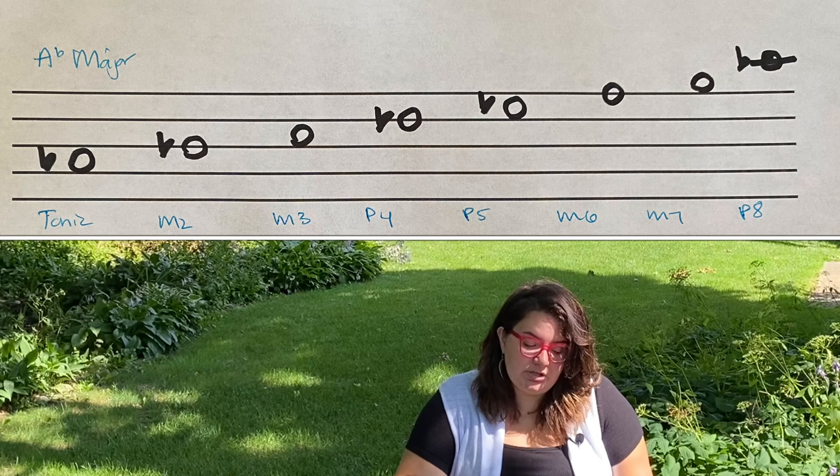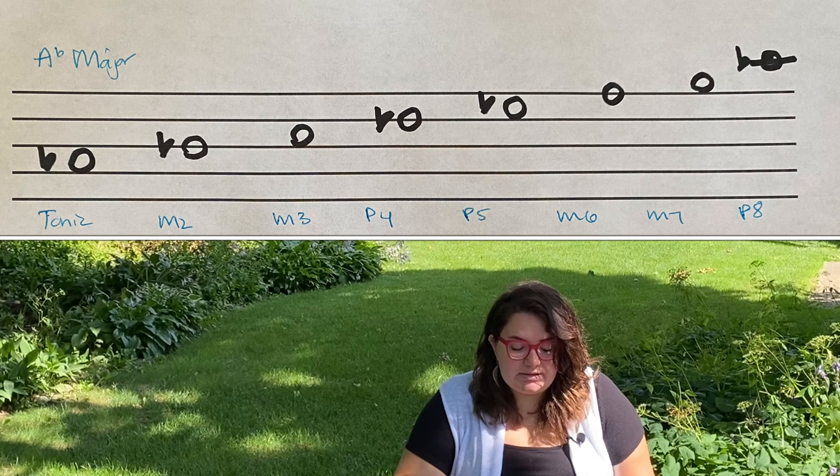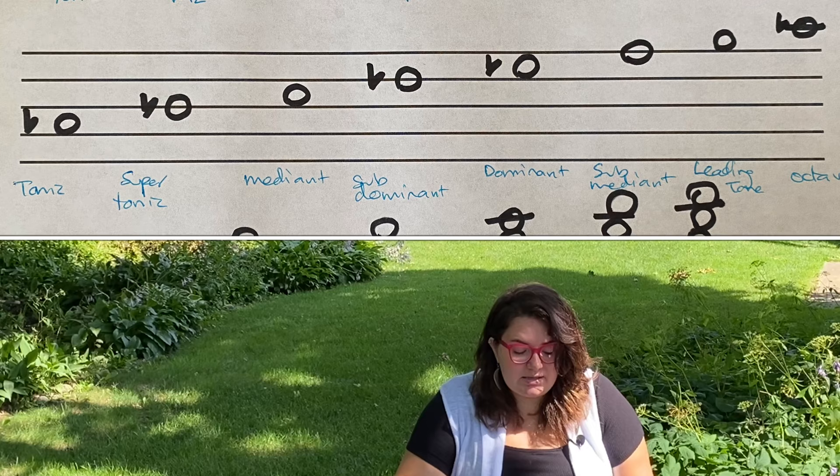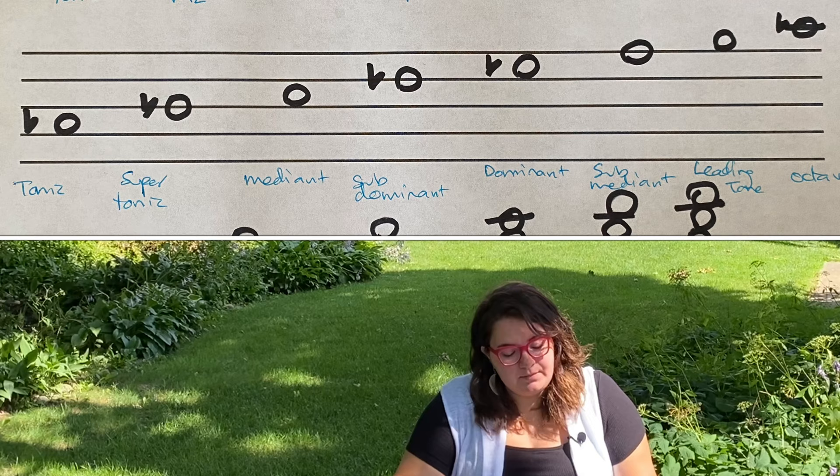Our scale degrees: tonic is A-flat, supertonic is B-flat, mediant is C, subdominant is D-flat, dominant is E-flat, submediant is F, leading tone is G, and octave is A-flat.